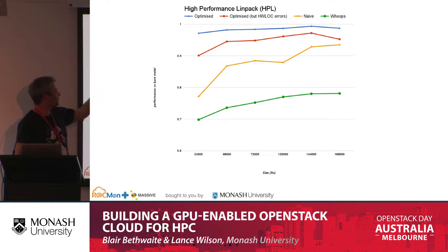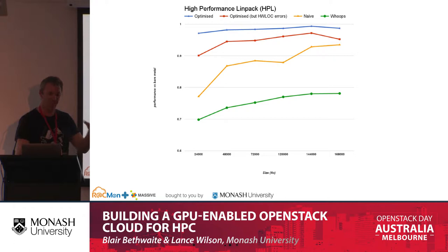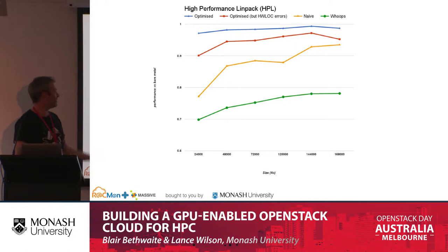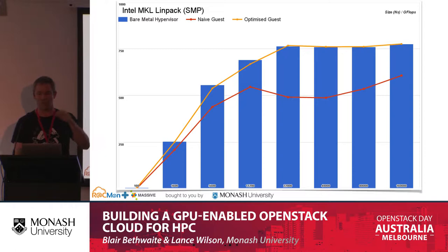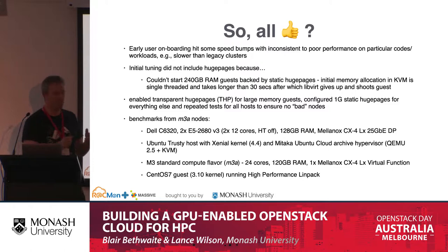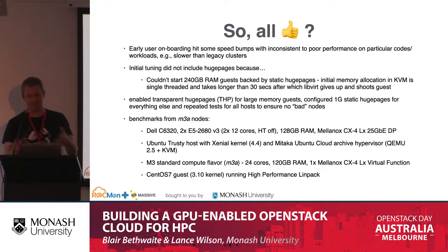We found some interesting problems with the hardware locality library in OpenMPI, which initially didn't understand the virtual topology it was seeing inside QEMU and wasn't pinning properly when running HPL. Once we worked around that, the blue line shows what you get for the optimised configuration. We also did the same thing using Intel NPL LINPAC, which is a threaded rather than OpenMPI implementation — a similar story. But LINPAC is really a microbenchmark; it gets a lot of press but doesn't tell you what a real user workload will be like.